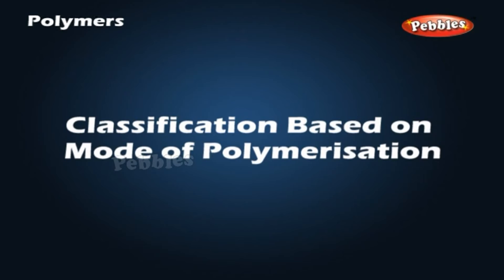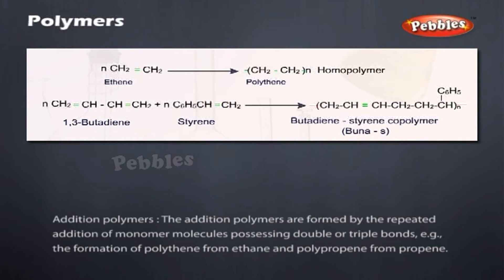Classification based on mode of polymerization. Addition polymers: The addition polymers are formed by the repeated addition of monomer molecules possessing double or triple bonds. For example, the formation of polythene from ethene and polypropene from propene.